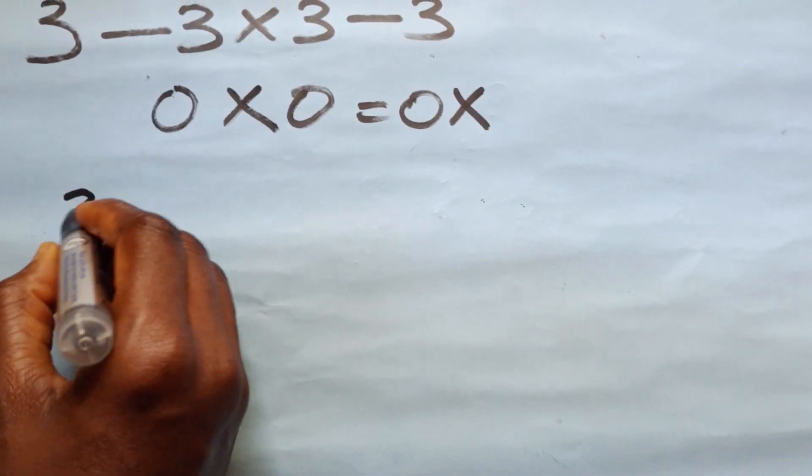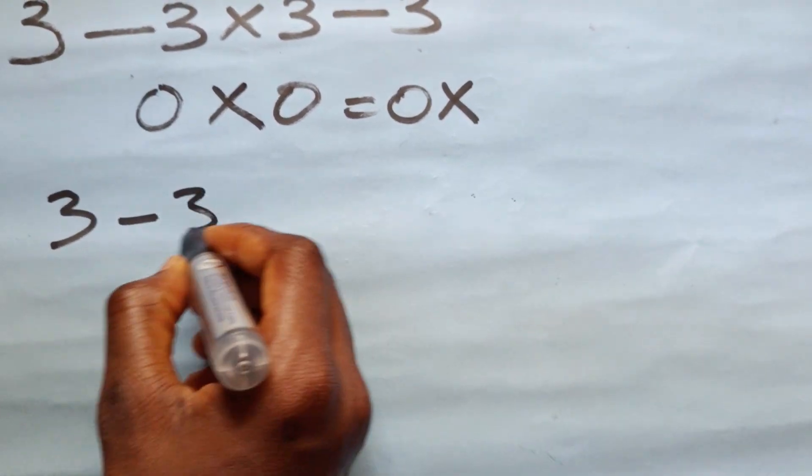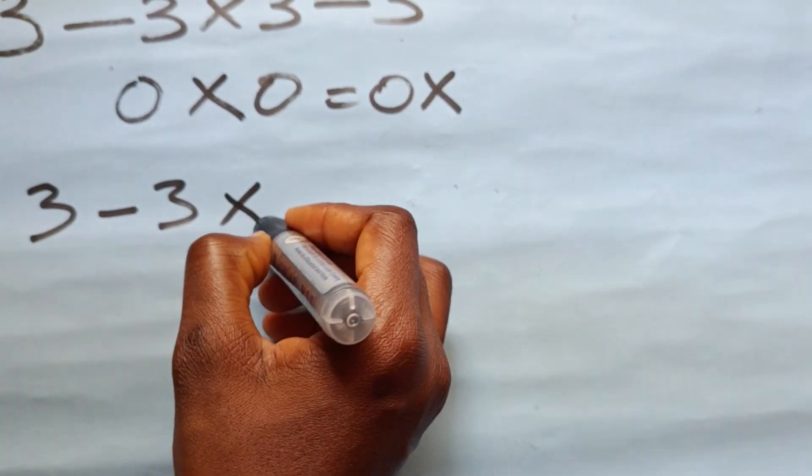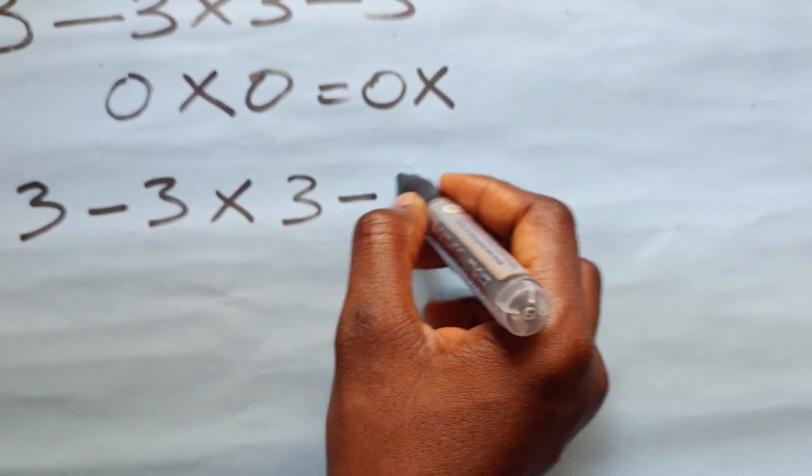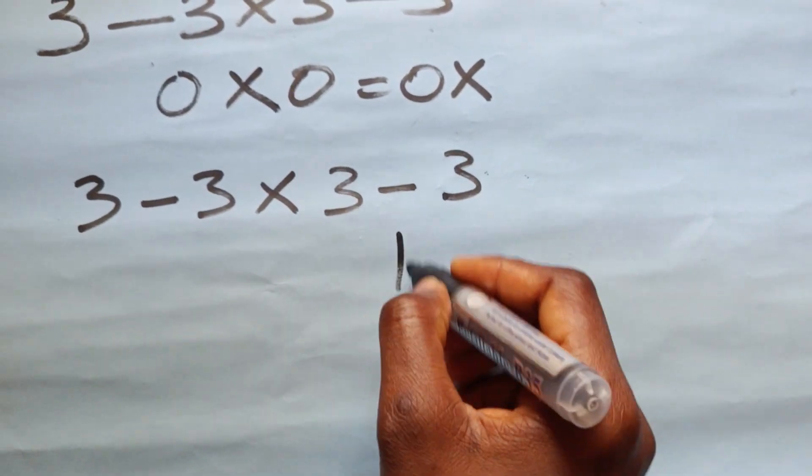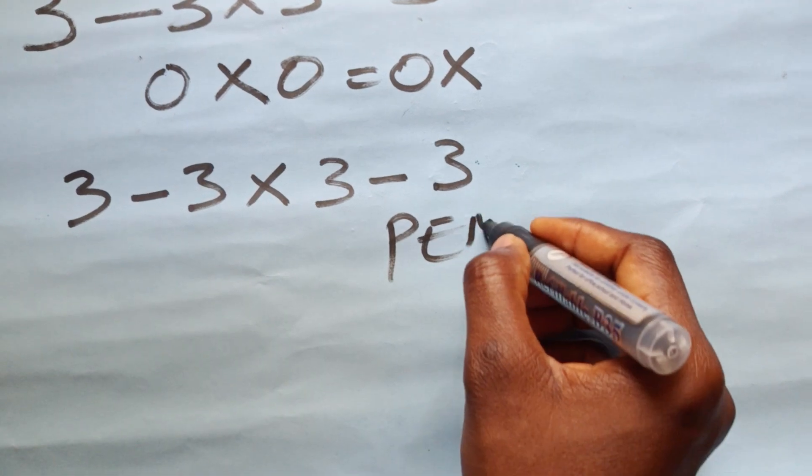Now we have 3 minus 3 times 3 minus 3. Following the order of operation PEMDAS,